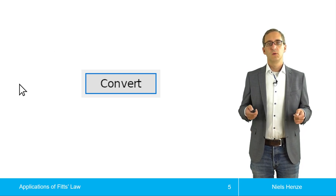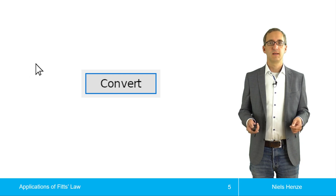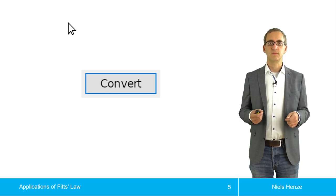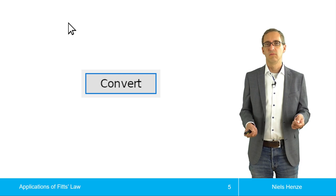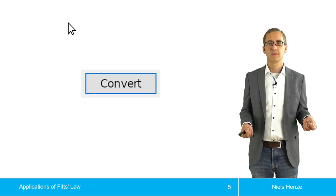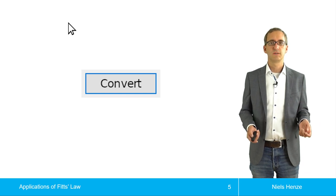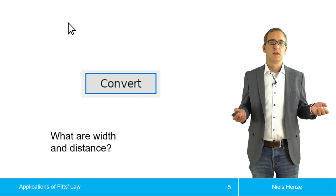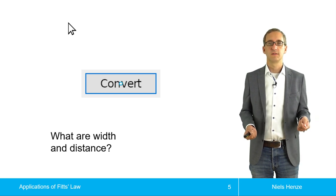But if you now move the mouse pointer to another position — say, upward — then again we would like to know how far the button is away and what the size of the button is. For the distance, it's not very difficult; we just take the center of the button again and figure out the distance.